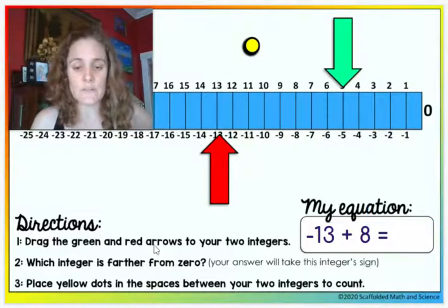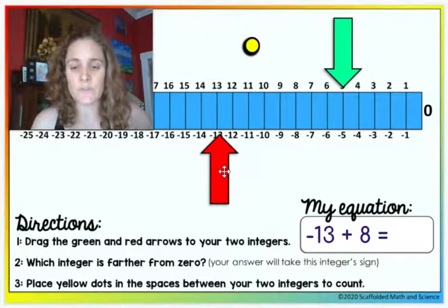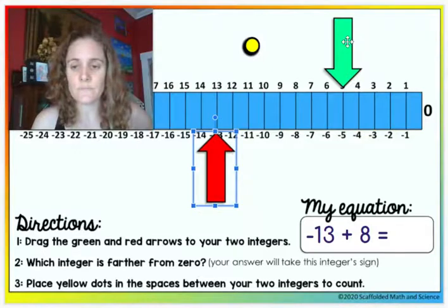So what I'd do here is I would follow the direction, so drag the green and red arrows to your two integers, so negative 13 and 8.